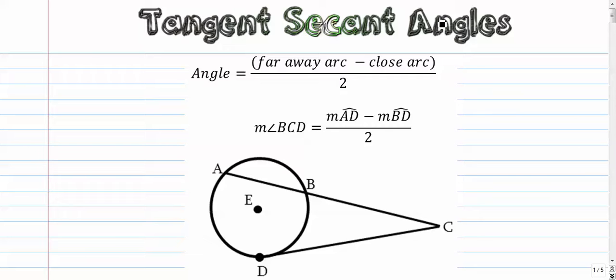Alright, next up: tangent-secant angles. We've got ourselves a tangent segment CD and a secant that are intersecting out here at point C. The rule, which is very similar to one we've seen before with secant-secant angles, is the angle is equal to the far away arc minus the arc that's closest, divided by two.